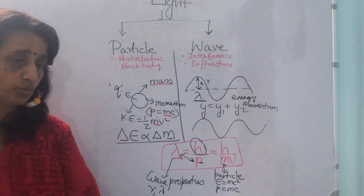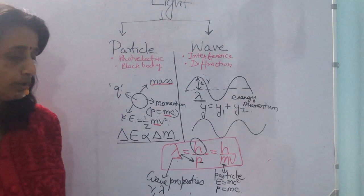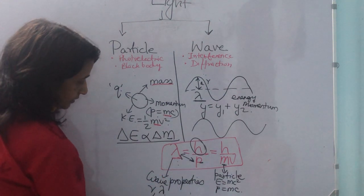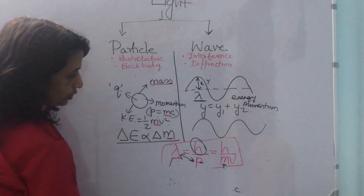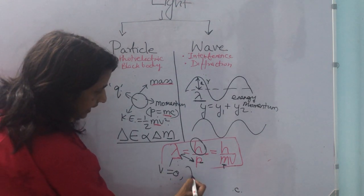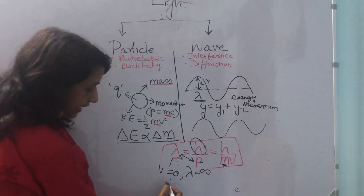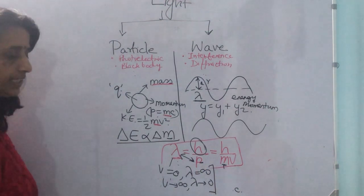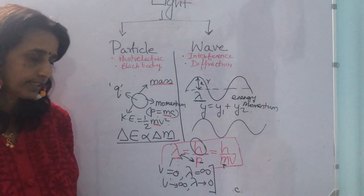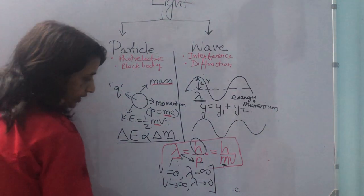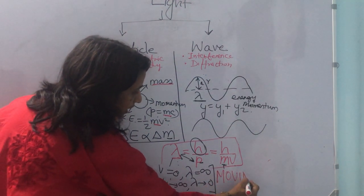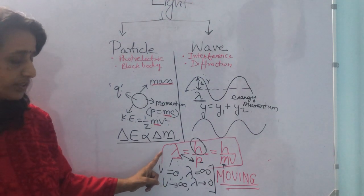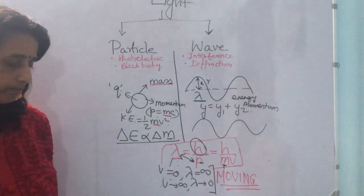So, if you note in this expression, if I put v equals 0, then lambda tends to infinity. And if v tends to infinity, then lambda tends to 0. That means, the de Broglie wavelength is associated with moving particles only. The particles should be moving. They should not be static. If the particles are moving, then we can simply apply the expression, lambda equals h over p, or the de Broglie wavelength.